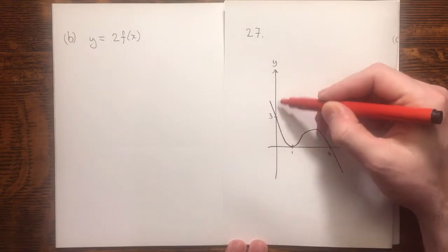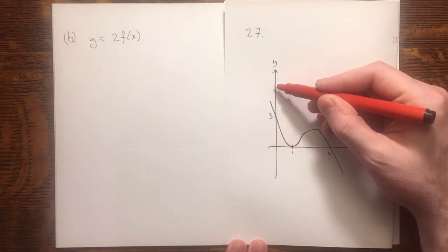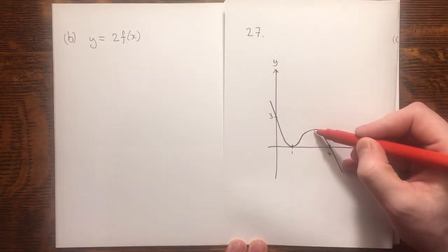However, the y intercept will be doubling up to 6, and we don't have the coordinates of this maximum, but if we did, we'd need to double those as well.